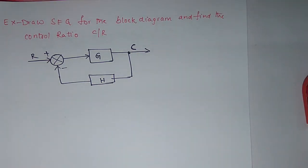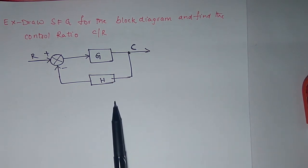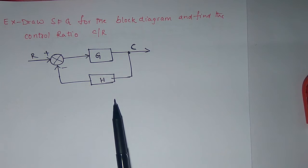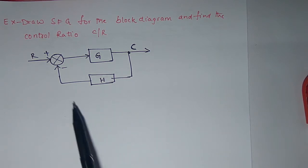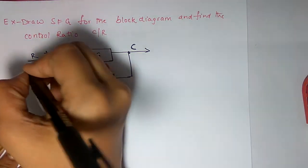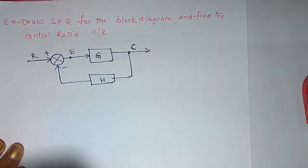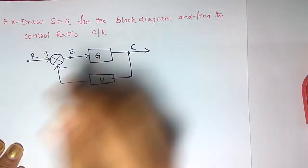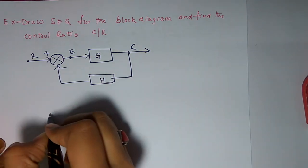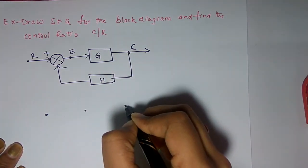Let's solve a few examples to get clarity on Mason's gain formula. Here is a given block diagram, and you have to find the transfer function using SFG — first converting the block diagram to SFG. Mark the nodes: this is the R node, this is node E, and this is node C.